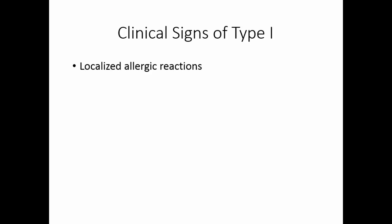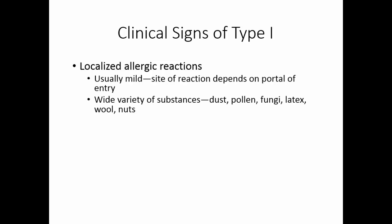Localized allergic reactions are usually mild, and they occur only at the site that was the portal of entry for the allergen. A wide variety of substances can act as allergens. Most of them are quite common: dust, pollen, fungal spores like Aspergillus. Some people are allergic to latex or wool, or nuts like peanuts.